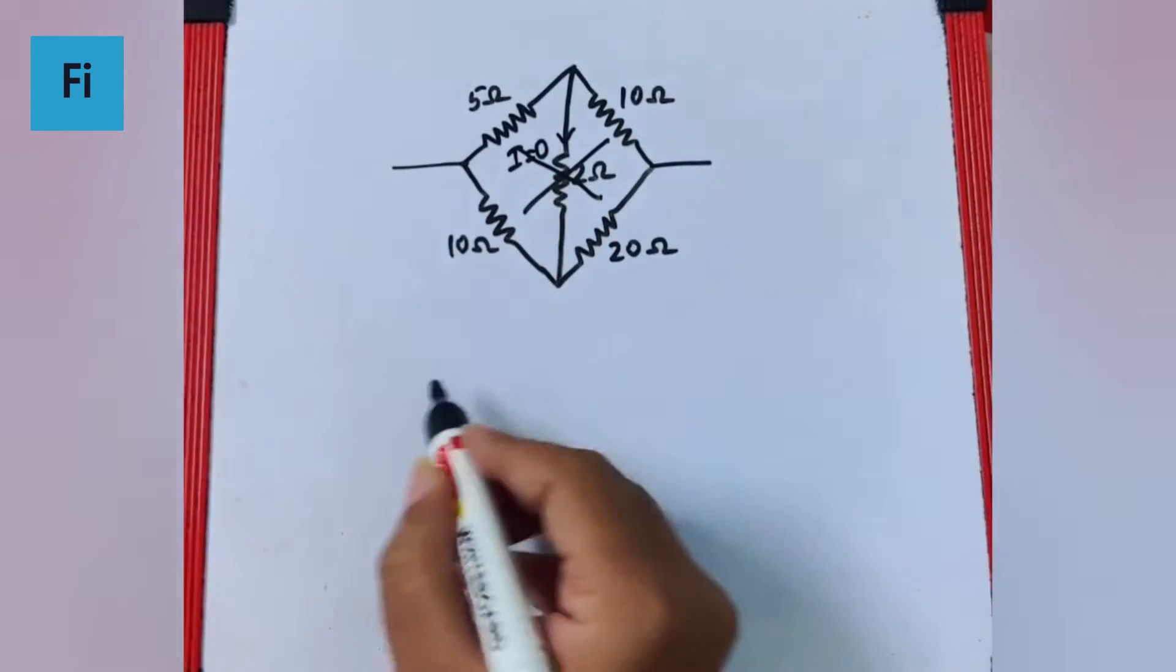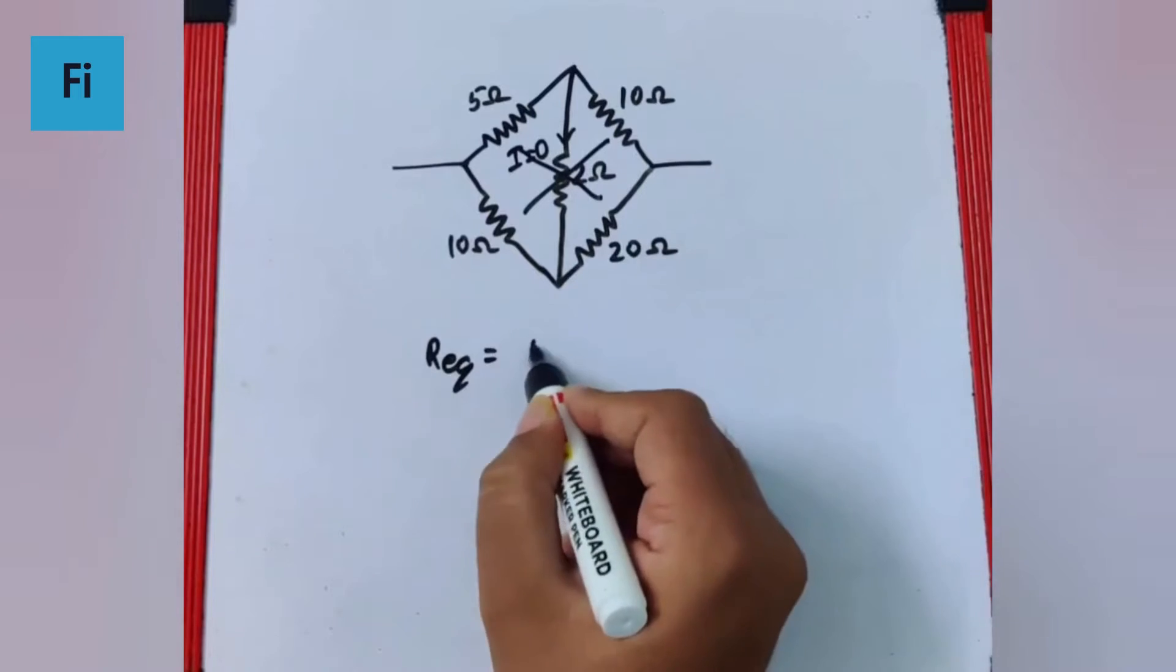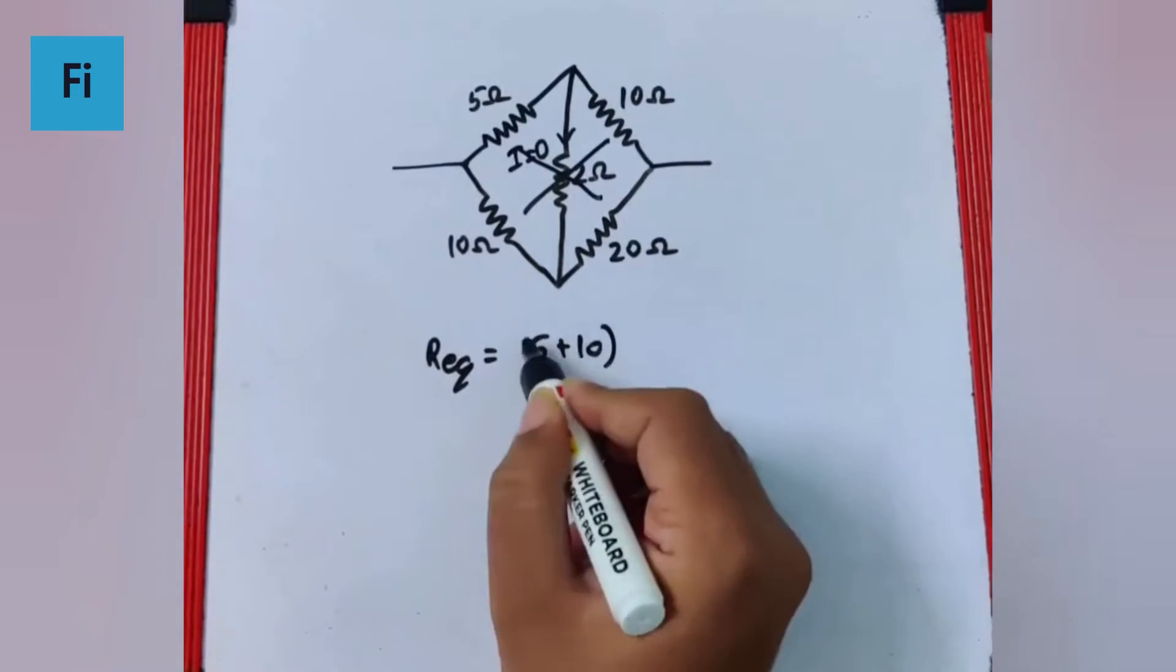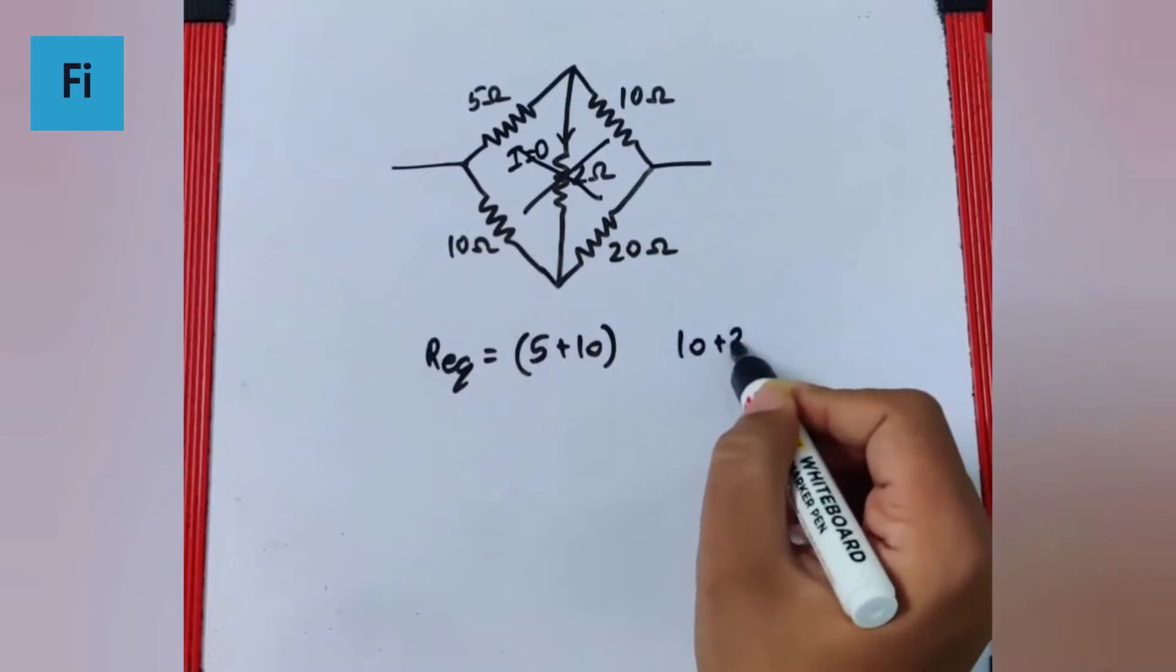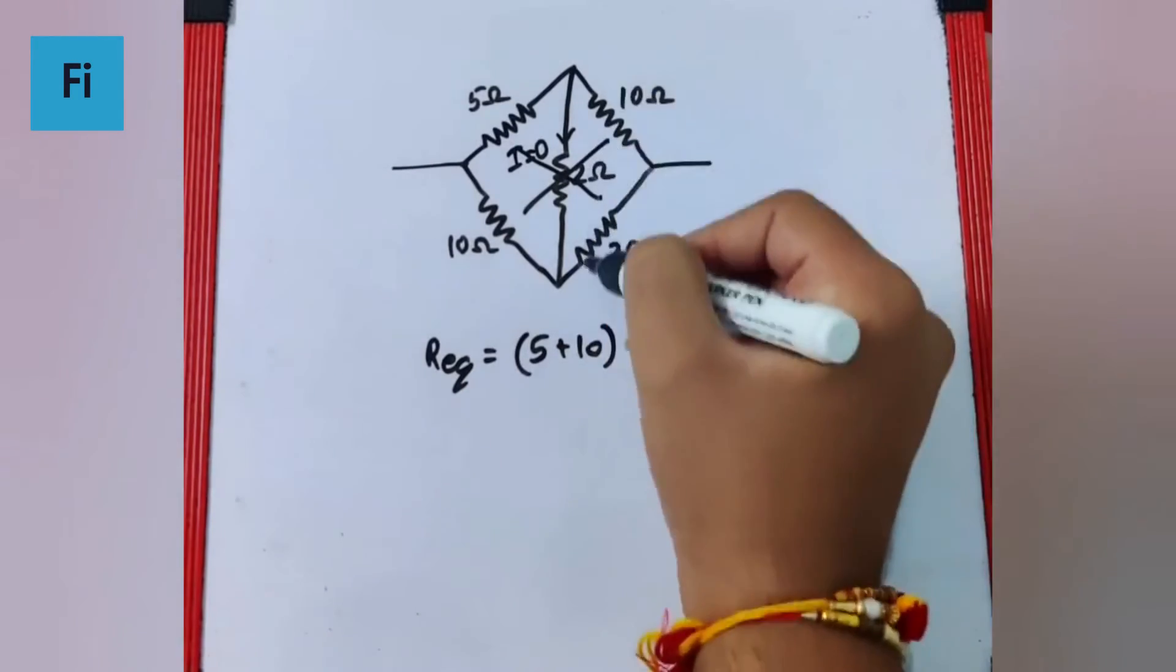5 and 10 are in series. So 5 plus 10, and 10 and 20 are in series, so 10 plus 20, and they together are in parallel with each other.